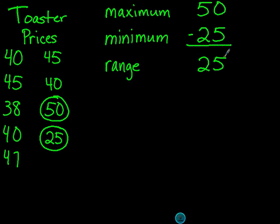There is a difference of $25 between the smallest price, the minimum price, and the maximum price, the biggest price in this set of numbers. To summarize: maximum is the biggest number, minimum is the smallest number, and the range is the difference between the maximum and the minimum.